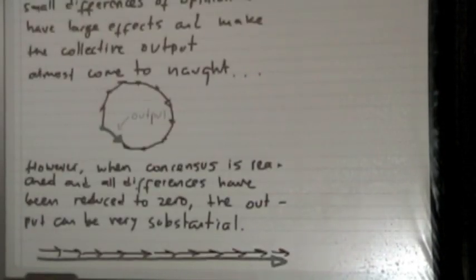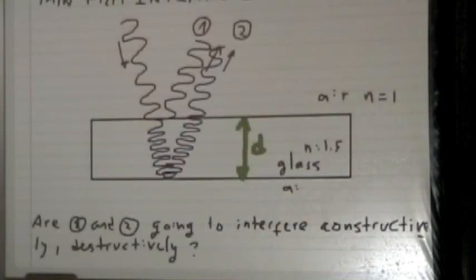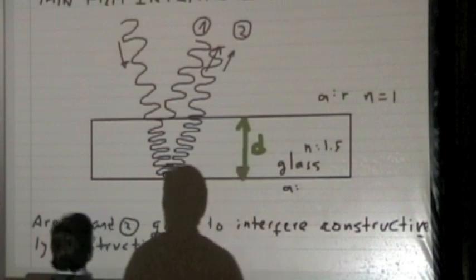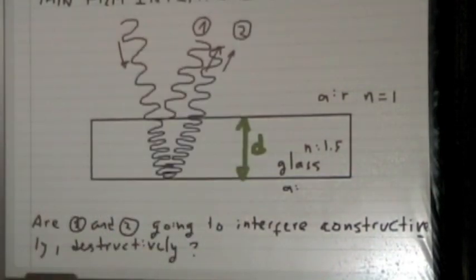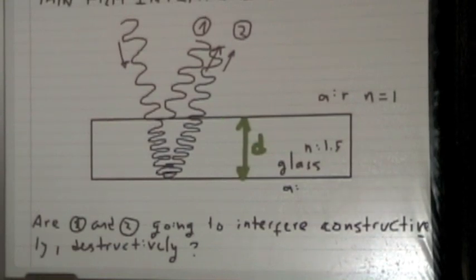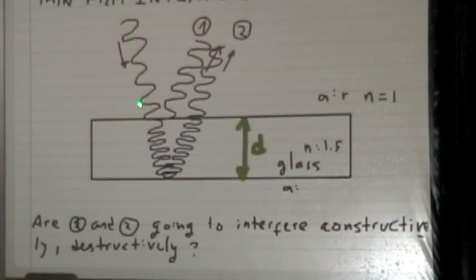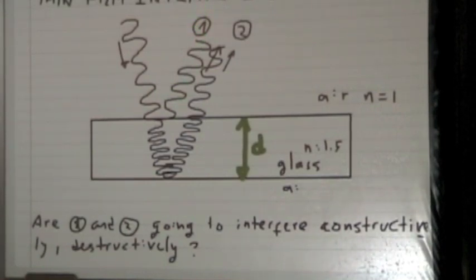I want to finish the discussion about thin film interference from last class. I have a better diagram now. What we're looking at is a thin piece of glass — very thin compared to the wavelength of light. If you have light coming in, part of it is going to be reflected. I'll call that wave one.